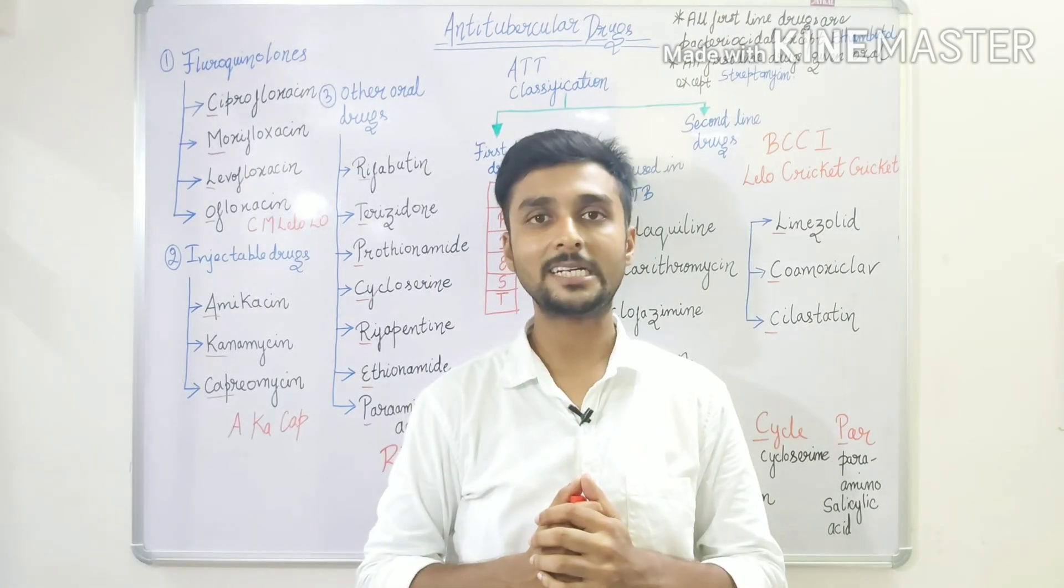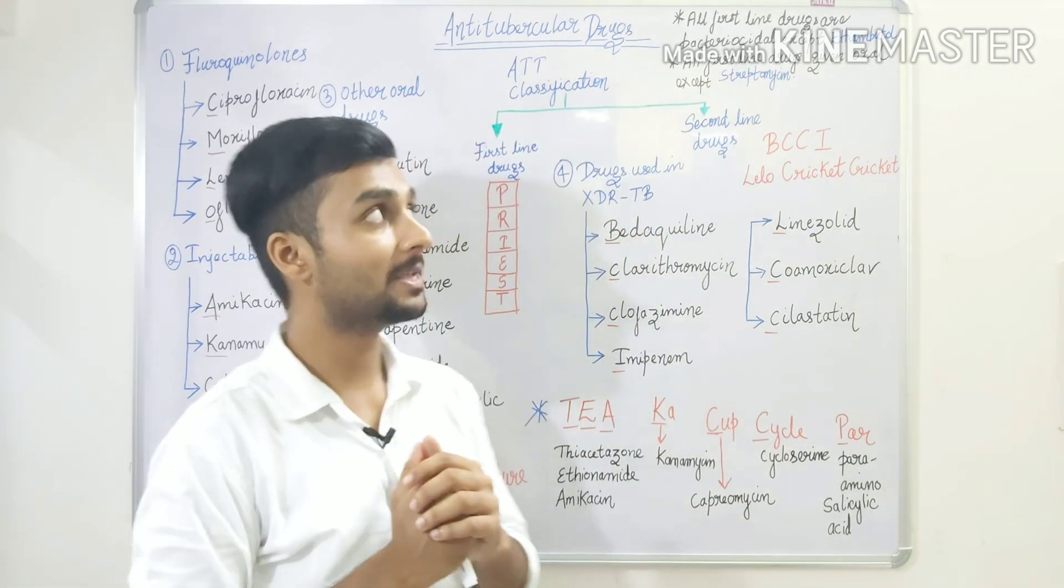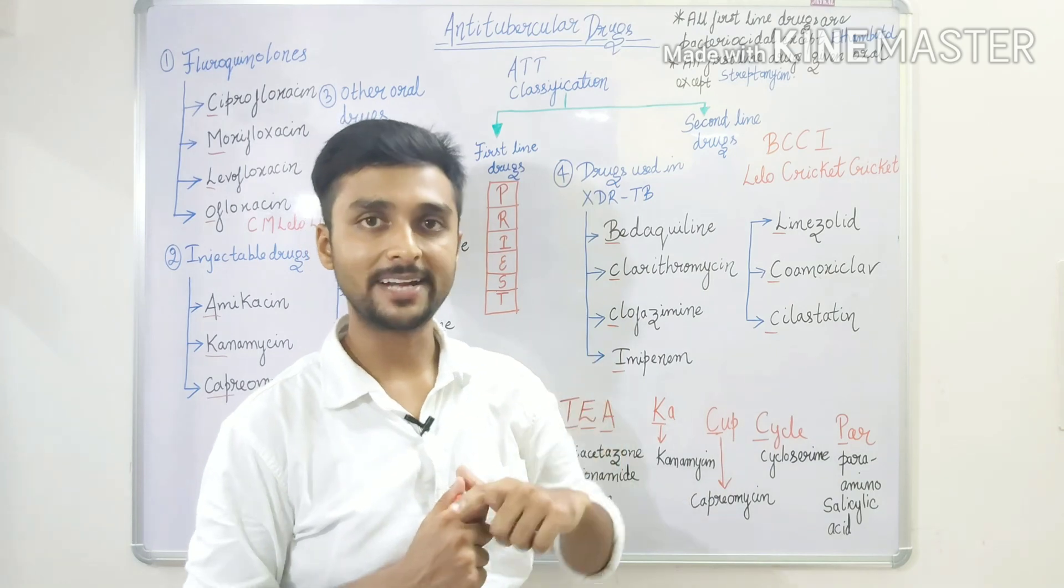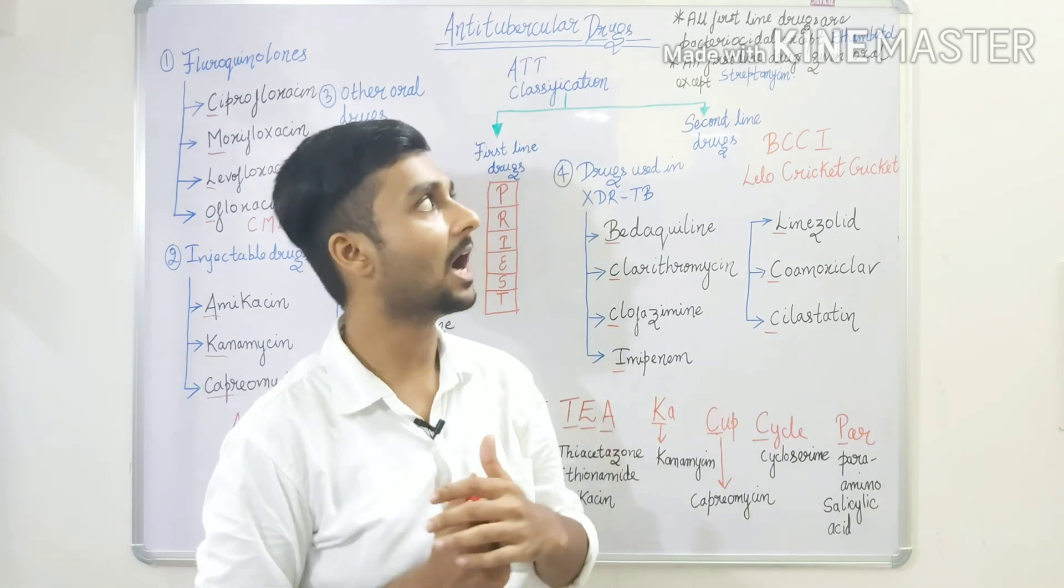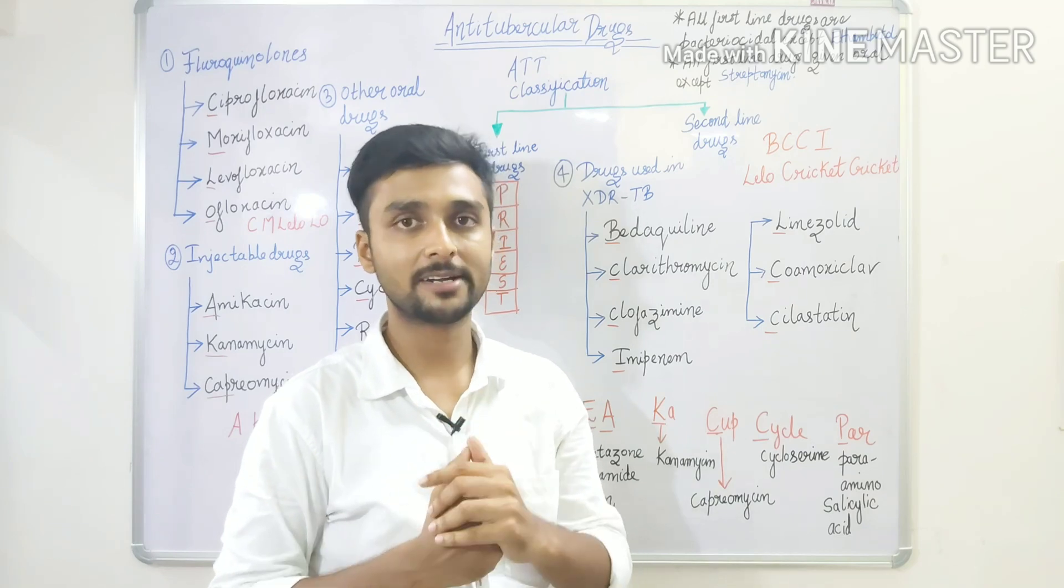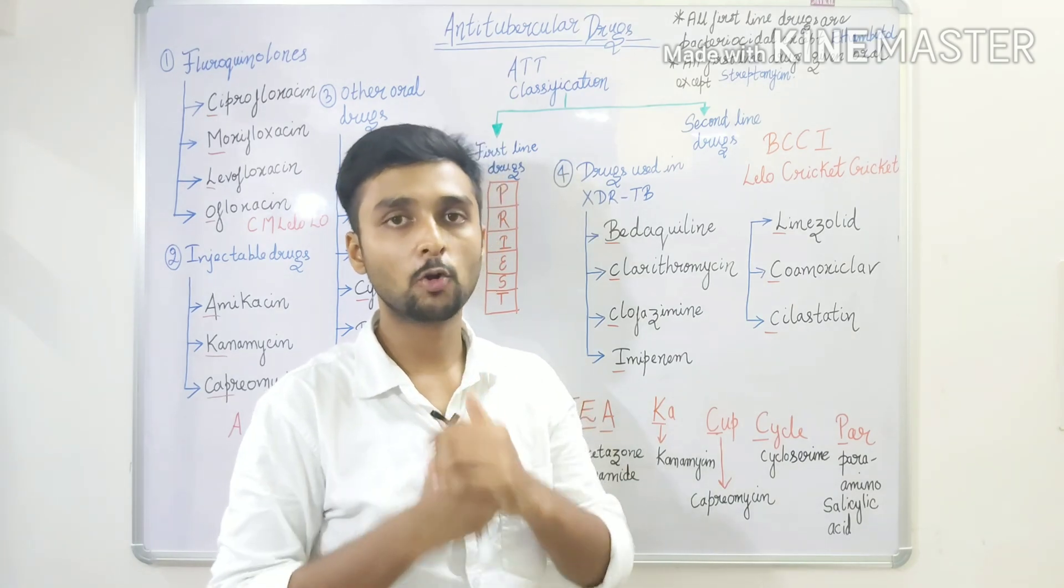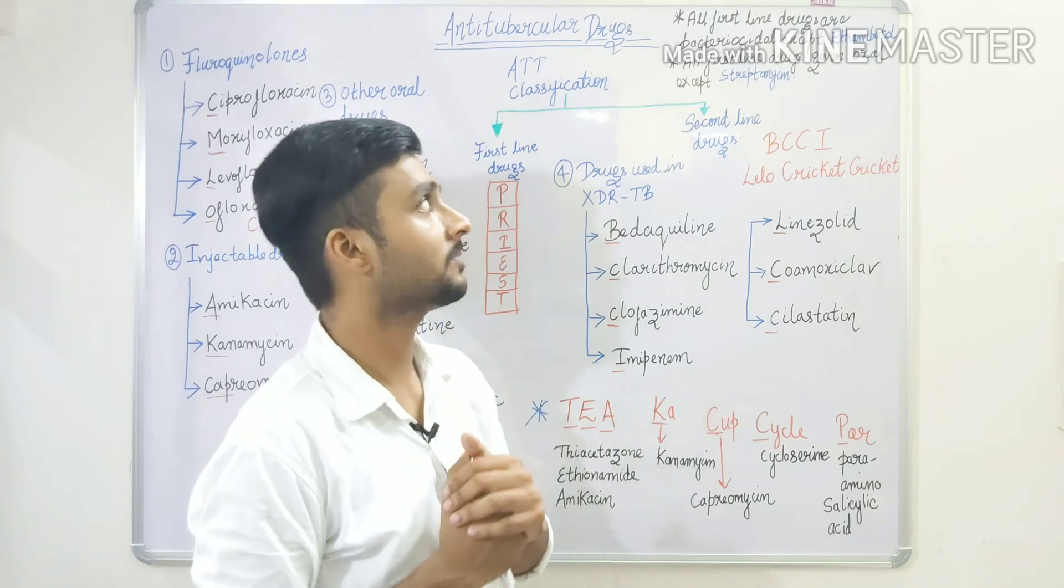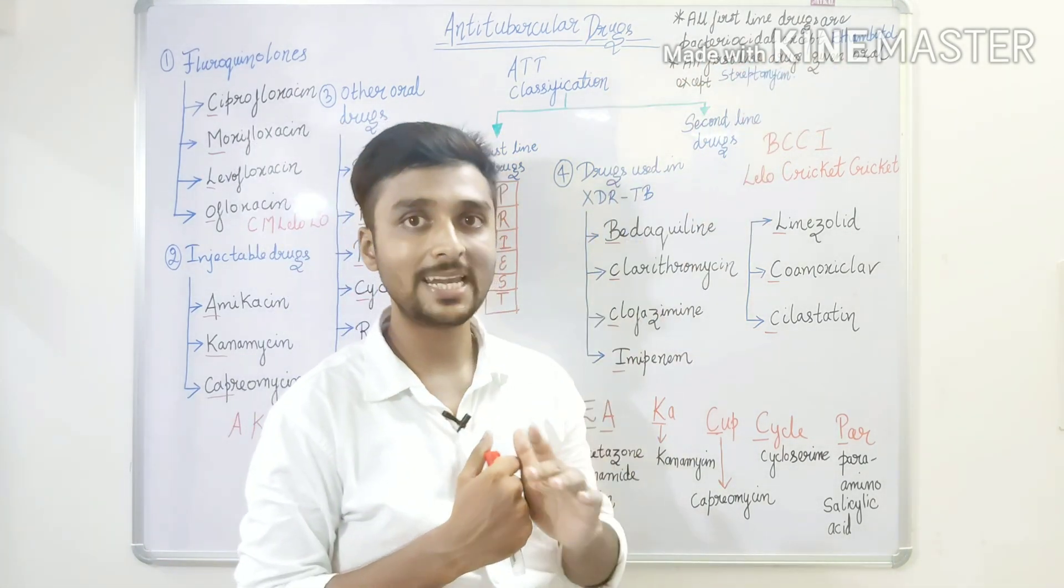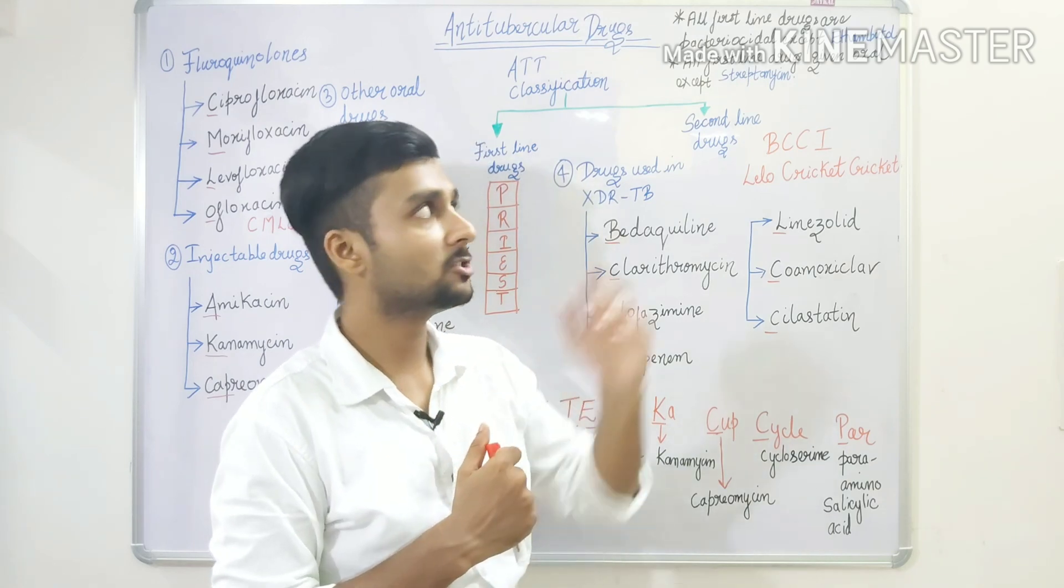Now we will learn two important things related to our first-line drugs: all first-line drugs are bactericidal, meaning they kill bacteria, except Ethambutol which is bacteriostatic, meaning it stops the growth rate or production of bacteria. All first-line drugs are given orally except Streptomycin which we give by injection.